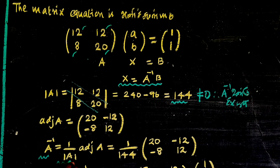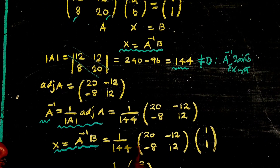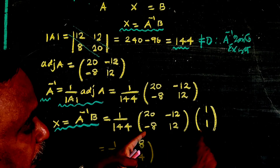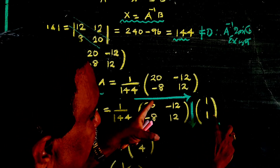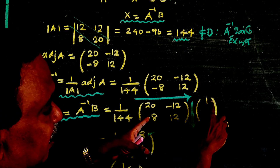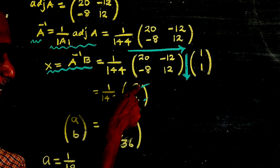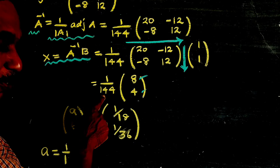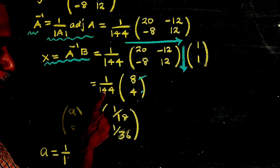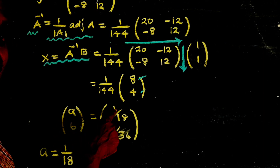A inverse is equal to 1 by determinant of A, which is 1 by 144, into the adjugate matrix. Then X is equal to A inverse B: 1 by 144 into the matrix, giving us the result. After matrix multiplication, we get the values: 8 divided by 144 simplifies to 1 by 18, and 4 divided by 144 simplifies to 1 by 36.